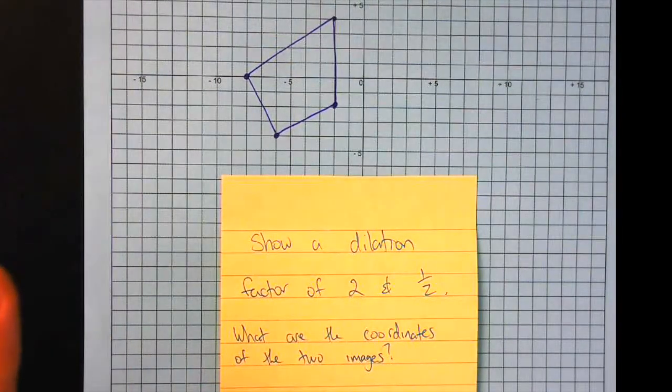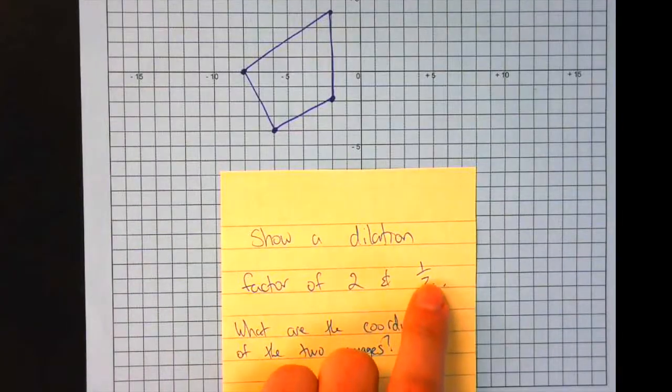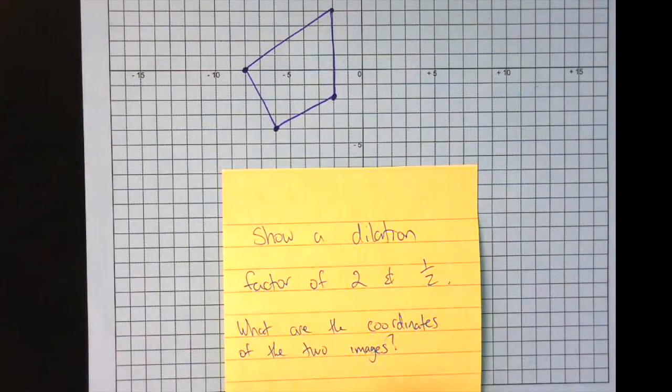So two dilations, one with a factor of two, one with a factor of a half, and what are the coordinates?